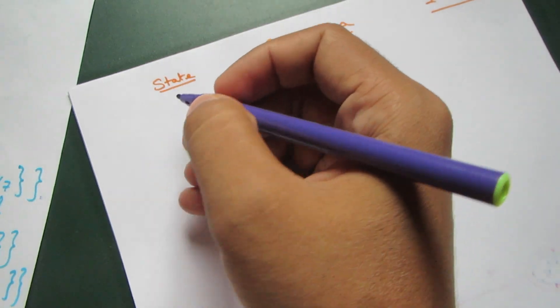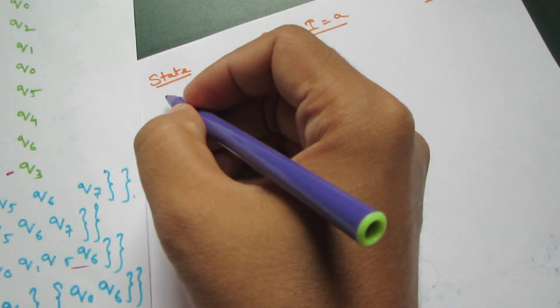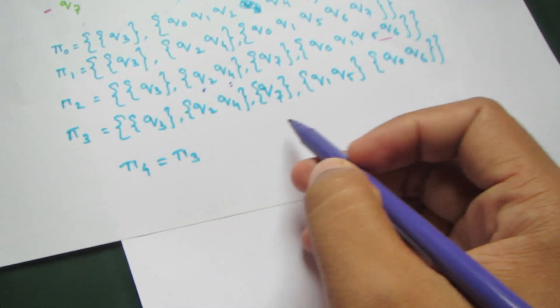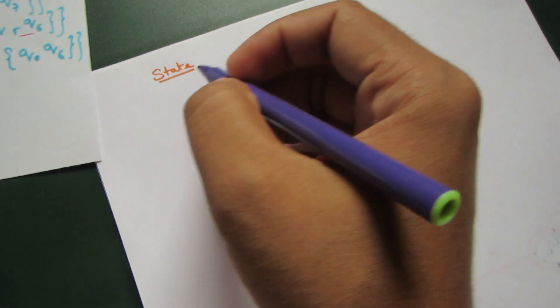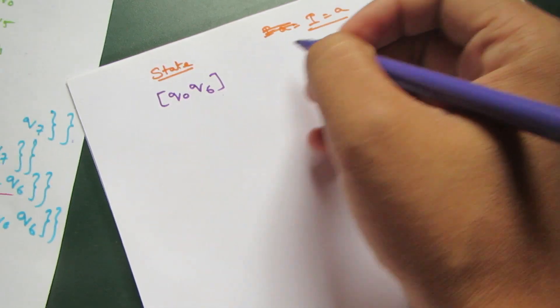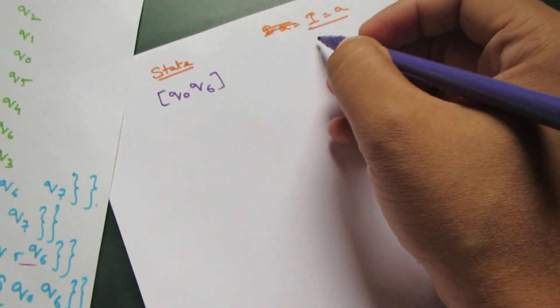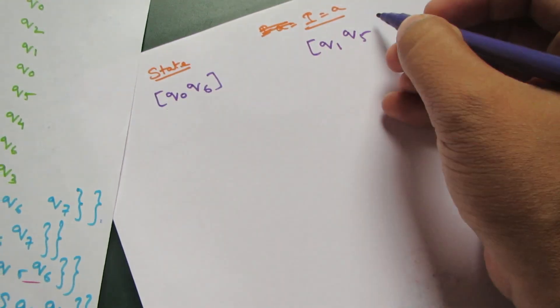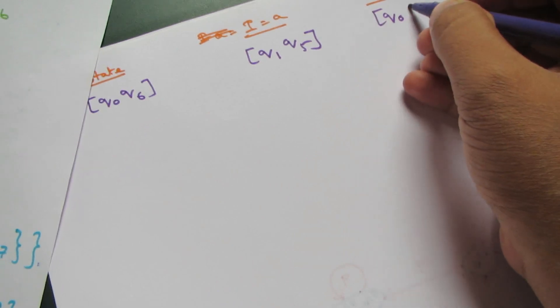For the first state, we write q0. Since q0 is contained in a group, we write the entire group: q0 q6. The next state is q1, so we write its entire group: q1 q5. And this one is q0 again, so q0 q6.